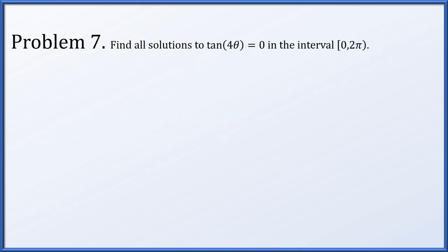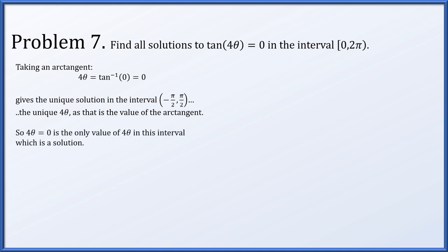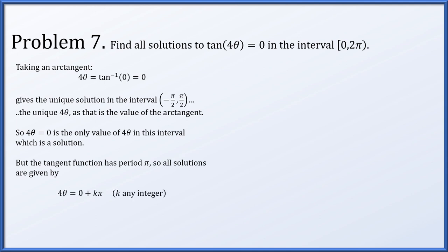In problem 7, we find all solutions to tangent of 4 theta equals 0 on the interval from 0 to 2 pi, including 0 but not 2 pi. Taking arc tangent gives 4 theta equals arc tangent of 0, which is 0. The tangent function has period pi, so all solutions for 4 theta are: 4 theta equals 0 plus any integer k times pi. Dividing by 4, theta equals pi over 4 times any integer.